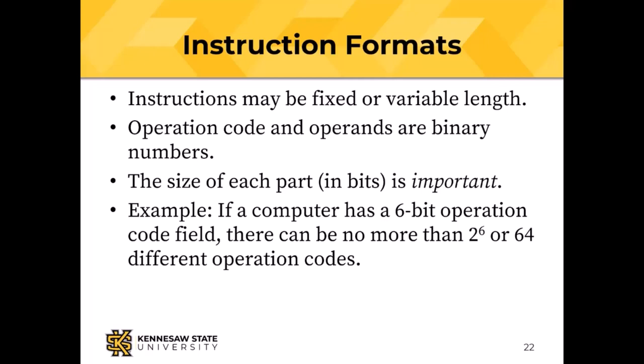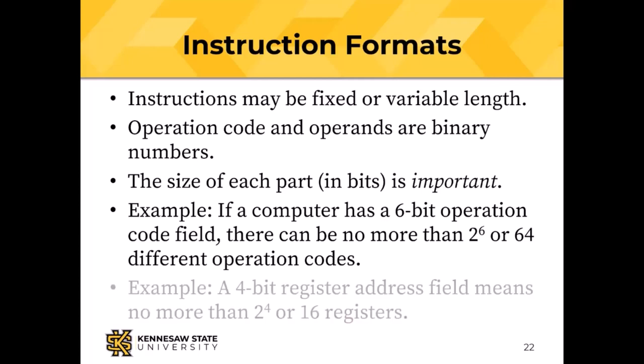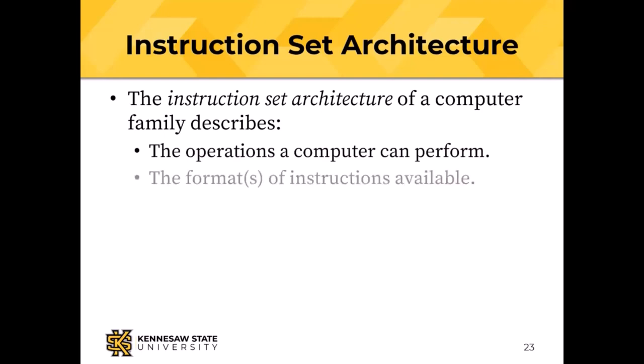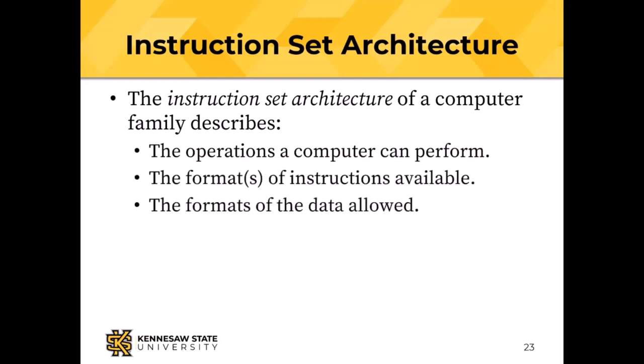Often we don't need as many as 64, but many modern computers have a lot more. A 4-bit address register field means I can't have more than 2 to the 4th, or 16 registers. The instruction set architecture of a computer family tells the operations that can be performed, the format of the instructions, and the formats of data — different computer families can have different instruction set architectures.